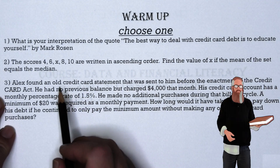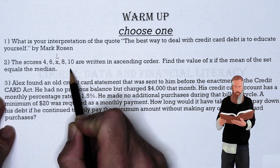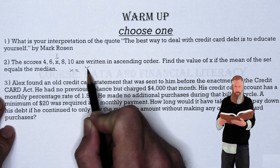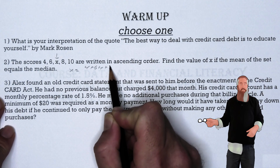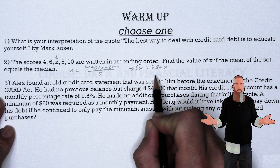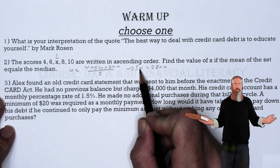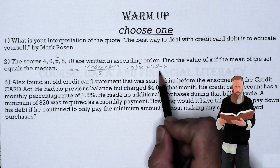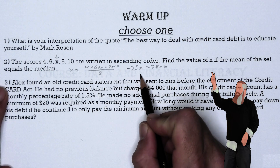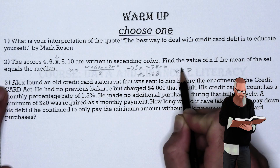The first thing to understand is that the median equals the middle, so the median equals x. Mean is average, so we set up: (4 + 6 + x + 8 + 10) divided by 5 equals x. Multiplying both sides by 5, we get 5x on the left and 28 + x on the right. Moving x to the other side gives us 4x = 28, so x = 7.